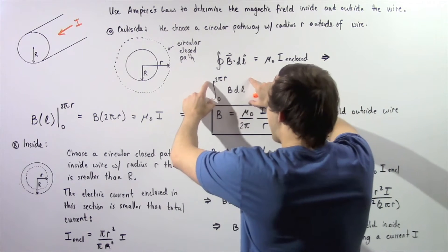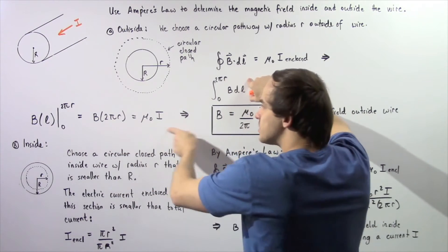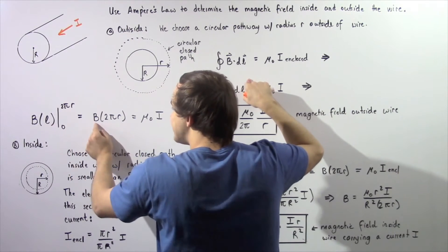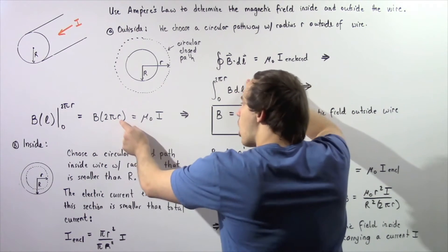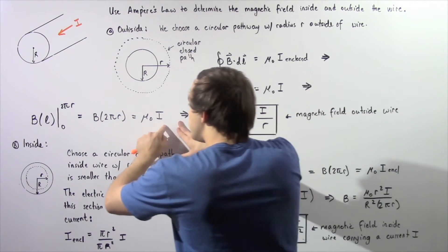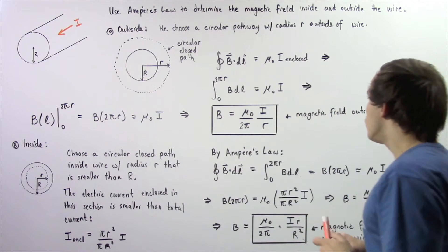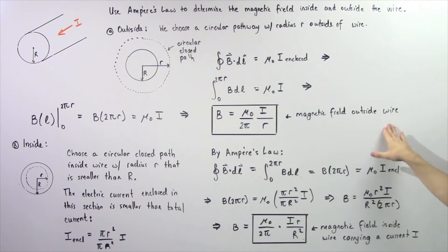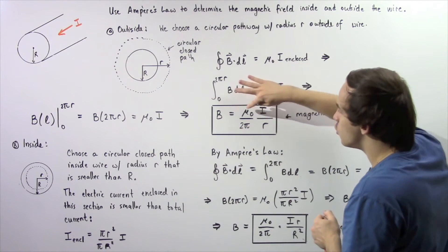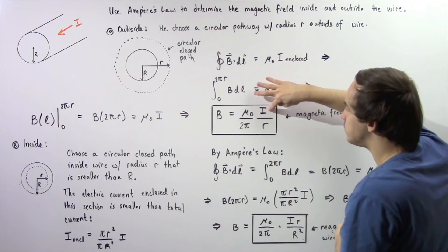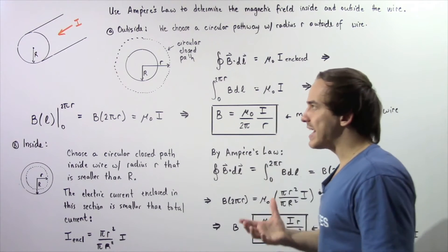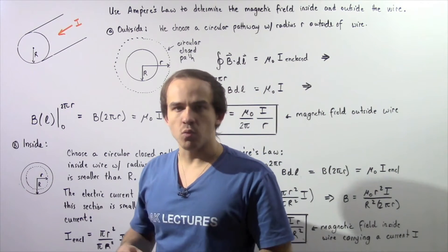Evaluating the integral, we get B multiplied by L from zero to two pi r, which equals B multiplied by two pi r, and that is equal to mu-naught multiplied by I. Solving for B, we see that the magnetic field outside our conducting straight wire is equal to mu-naught divided by two pi, multiplied by I divided by r. This gives us our magnetic field outside the conducting wire.